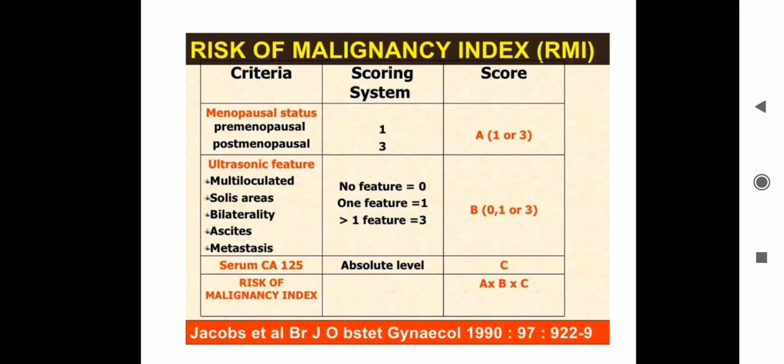The Risk of Malignancy Index (RMI) uses three criteria. Menopausal status: premenopausal scores 1, postmenopausal scores 3 — this is score A. Ultrasonic features assessed are: multiloculated cyst, solid areas, bilaterality, ascites, and metastasis. If none are present, score is 0; one feature scores 1; more than one feature scores 3 — this is score B. CA-125 absolute level is score C. RMI = A × B × C.